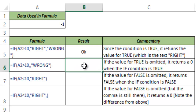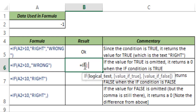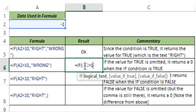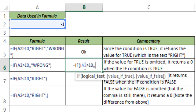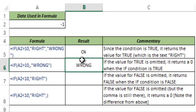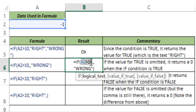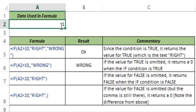Now let me show you what happens when you omit one of the conditions. If I type: IF A2 is greater than 10, then I have to specify a value if the condition is true but I do not specify anything — I just press comma and specify the value for the false condition — and hit Enter. This returns 'wrong' because minus 1 is not greater than 10, so it goes to 'wrong'. But if I put 20 here, you can see it returns 0. So whenever you omit a value for true, the formula returns 0.